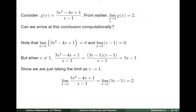For example, we know that the numerator and the denominator, being polynomials, have limits as x tends to 1 that exist. So, can we instead divide the limit of the numerator by the limit of the denominator as x tends to 1, to obtain the limit of g as x tends to 1?